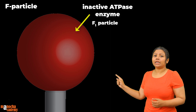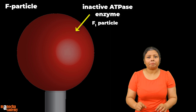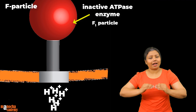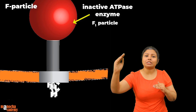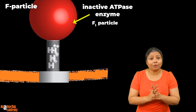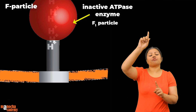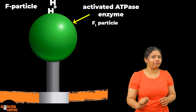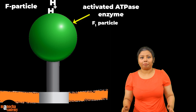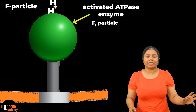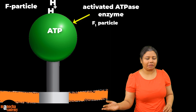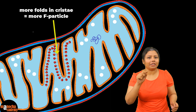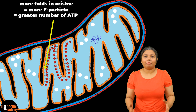This head, the F1 particle, is inactive usually. But when there is a concentration of hydrogen ions in the perimitochondrial space, the hydrogen ions move from their high concentration in the perimitochondrial space to their low concentration into the matrix by simple diffusion. During this process they pass through the hollow stalk and through the head, and the passage of these charged ions activates the F1 particle and the ATPase enzyme, converting ADP and Pi into ATP. More folding of the Cristae means more F particles and greater ATP generation.